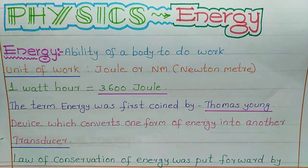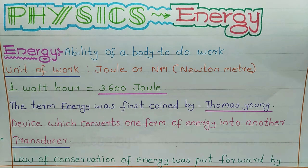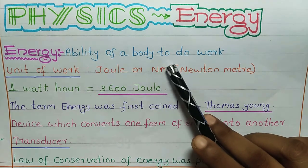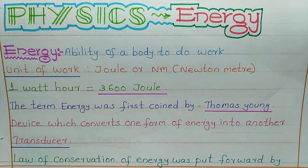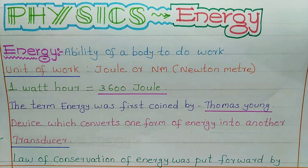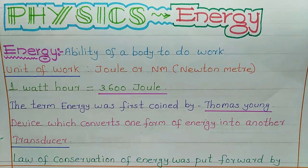Physics — Energy. First, let's see the definition of energy. Energy is the ability of a body to do work. The unit of work is joule or newton meter. We can write both these units for work — either joule or newton meter.